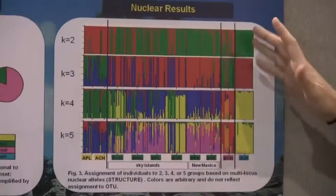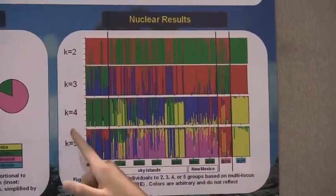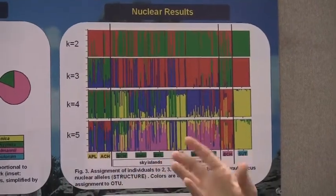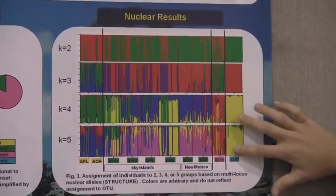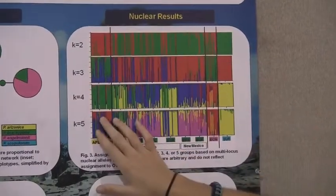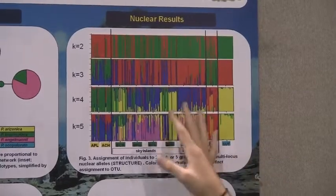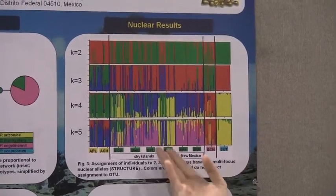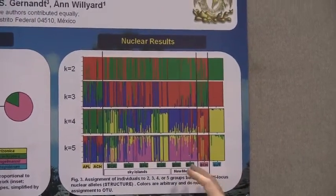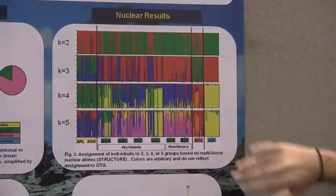Now for our nuclear results. We did structure analysis, which groups individuals into two, three, four, and five groups. We can see that Pinus Scopularum here is very distinct. Pinus Arizonica is fairly distinct, but there's a big jumbled mess of the Pinus Brachyptera, and Pinus Engelmanii shows some mixture.